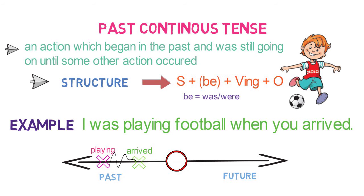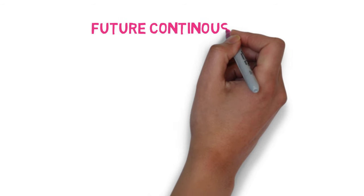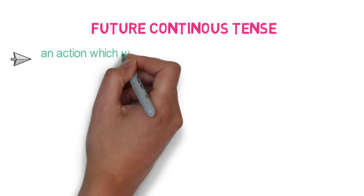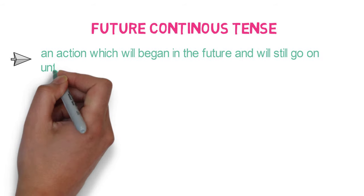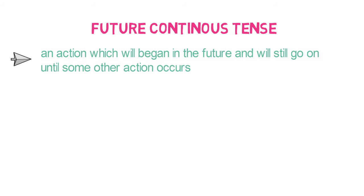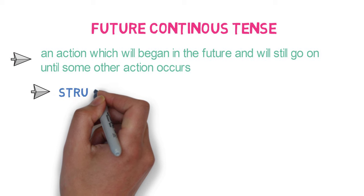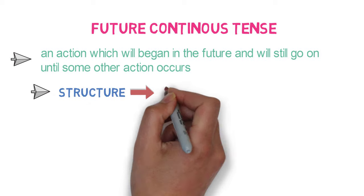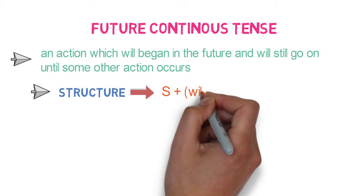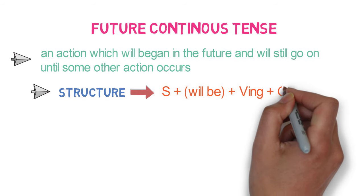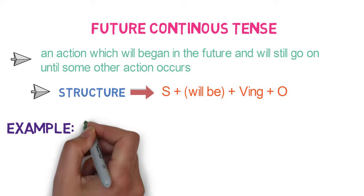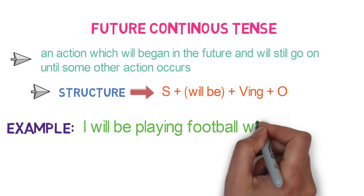Let's look into the next one. Future continuous tense refers to an action which will begin in the future and will still go on until some another action occurs. The structure is: subject plus will be plus verb-ing form plus object. For example: 'I will be playing football when you arrive.'